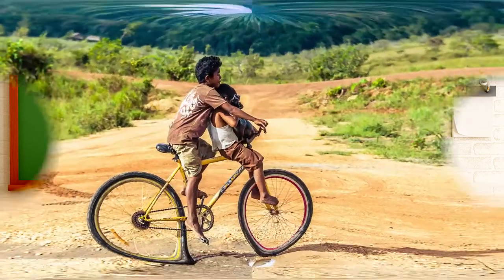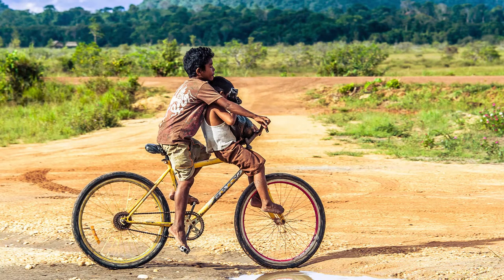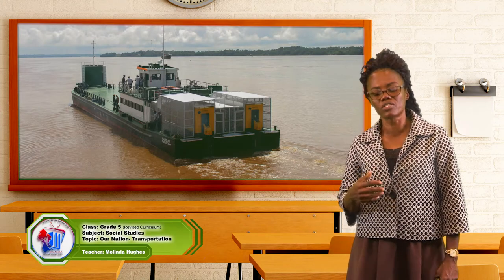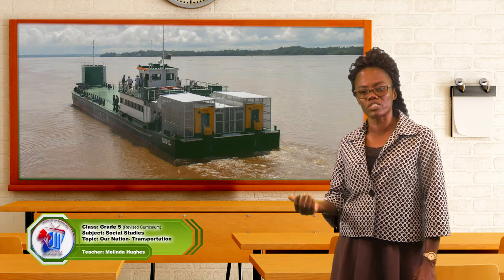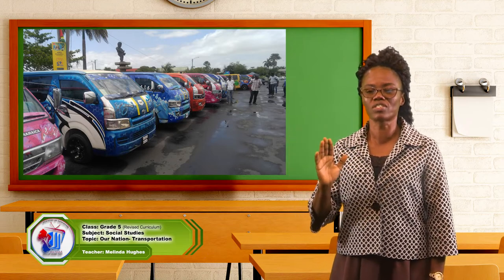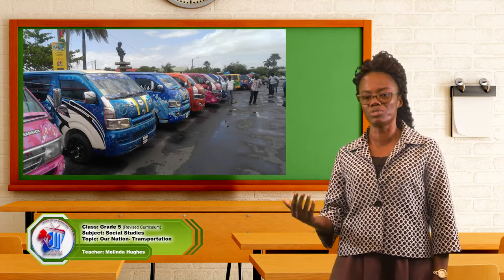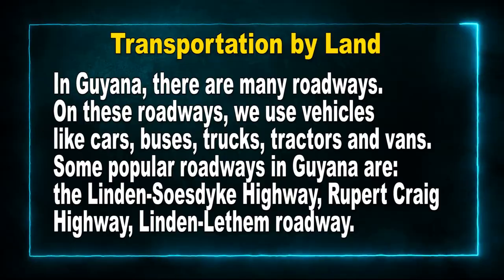We have persons riding across the interior savannahs — more specifically the Rupununi. We have persons going to school using bicycles. Movement of persons from Guyana to Suriname uses the MV Sandaka, a means of transportation across the Corentyne River. Persons who travel along the east coast from Lusignan down to Georgetown would join a minibus — specifically those labeled route 4 to 4. We also have private individuals or those who take taxis across the country, moving by motor car.